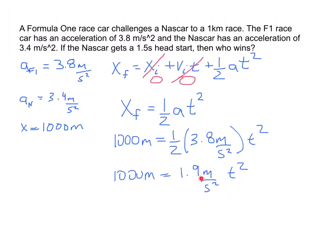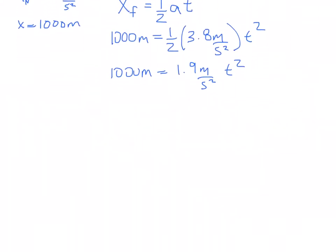So I'm going to multiply all this out and I get 1,000 meters is equal to 1.9 meters per second squared times t squared. Now I'm going to divide over here by 1.9 meters per second squared. When I divide one side, I usually just treat it as multiplying by the reciprocal. Notice that the meters cancel and we are left with 1,000 seconds squared divided by 1.9 is equal to t squared.